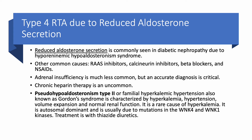Chronic heparin can cause type 4 RTA, but it's uncommon. Even less common is pseudohypoaldosteronism type 2, also called familial hyperkalemic hypertension or Gordon syndrome, which presents with hyperkalemia, hypertension, and fluid overload but normal kidney function. This autosomal dominant disorder is due to mutations in WNK4 and WNK1 kinases, and treatment is with thiazide diuretics.